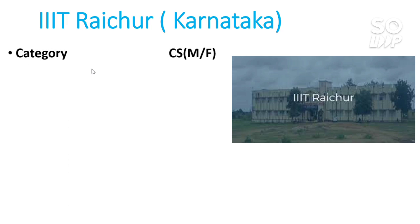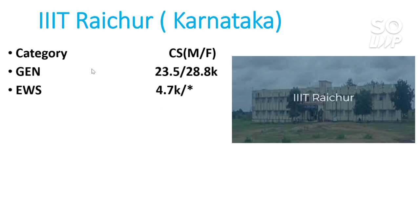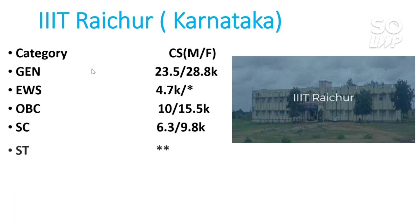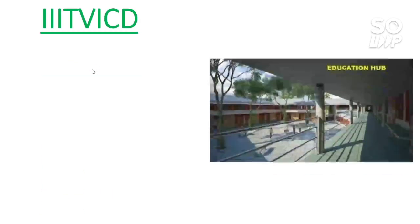Next is IIIT Raichur, situated in Karnataka. It also has only a CS branch, but there are separate male and female cutoffs. For General — male 23,500 and female 28,800. For EWS — there is no female reservation, male is 4,700. For OBC — CS 10,000 and 15,500. For SC — 6,300 and 9,800. There is no seat reservation for ST category, but ST students can compete for General seats.